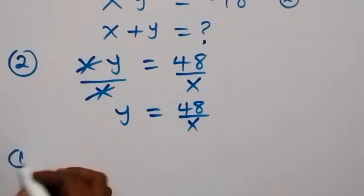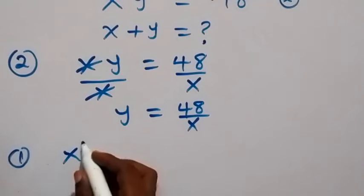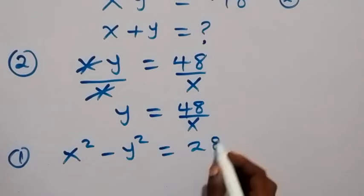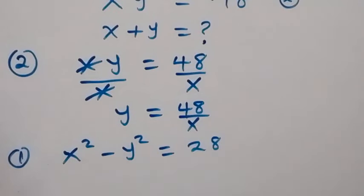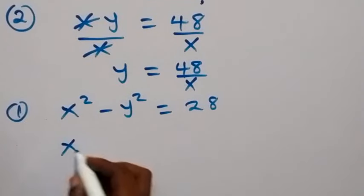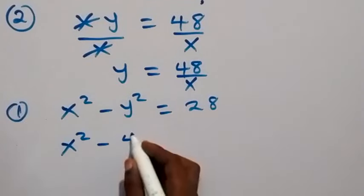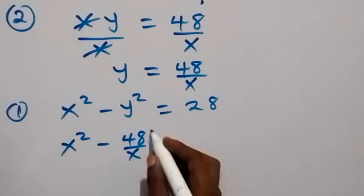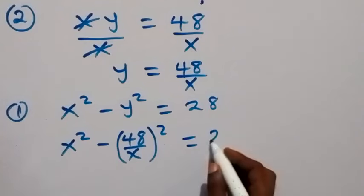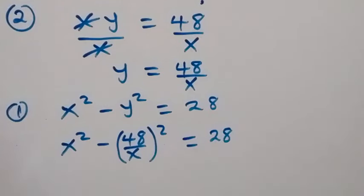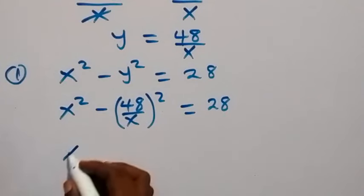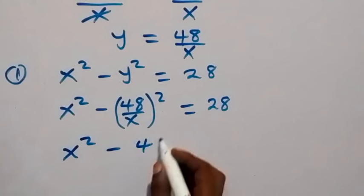We can substitute this into equation 1. Equation 1 is x squared minus y squared equals 28. Putting in this value of y, the equation becomes x squared minus (48 over x) squared equals 28.